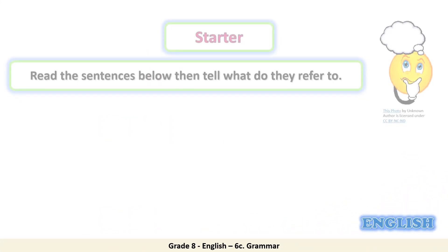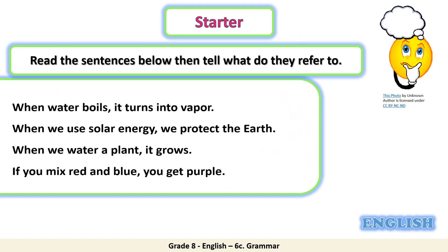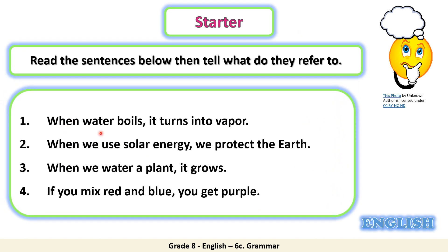As a starter let's read the following sentences together. When water boils it turns into vapor. When we use solar energy we protect the earth. When we water a plant it grows. If you mix red and blue you get purple. Now tell me, what do these sentences refer to? Can you agree or disagree with the information in these sentences?